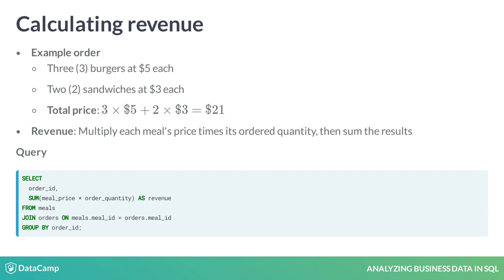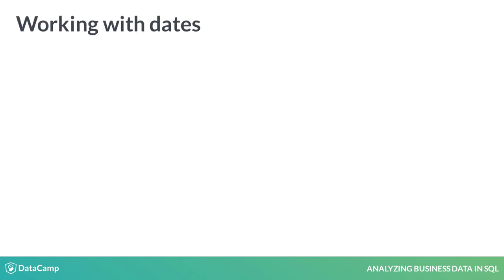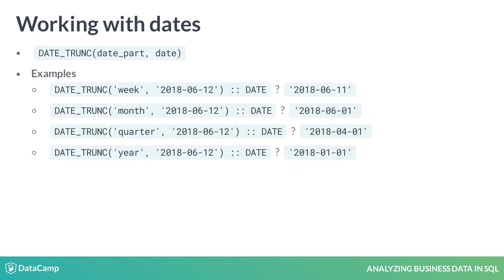When calculating revenue per month or some other date part, such as week, quarter, or year, use DateTrunc to truncate the ordered date to that date part. Given a date part and a date, this function returns the first day of the date nearest to the date part. DateTrunc outputs a timestamp and not a date, so DateTrunc's output is cast to date to drop the hours, minutes, and so on.